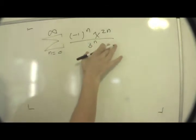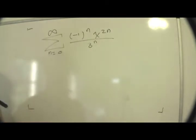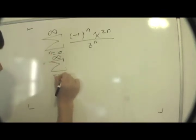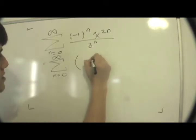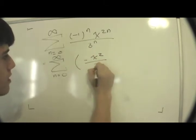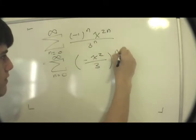Now this thing you may recognize as a geometric series and I'll show you why. This thing is a sum n equals 0 of minus x squared over 3 all to the power of n.